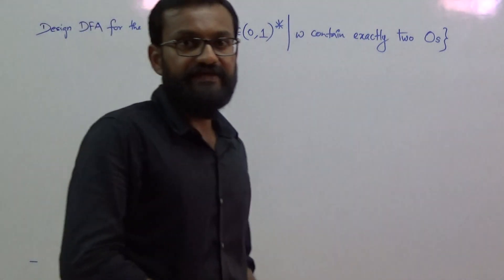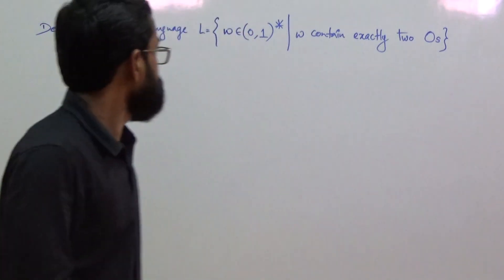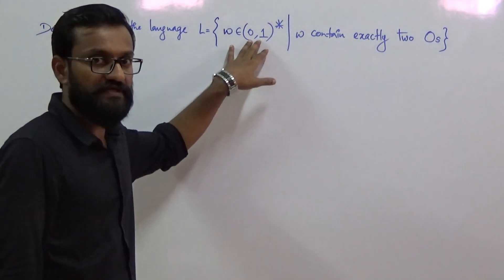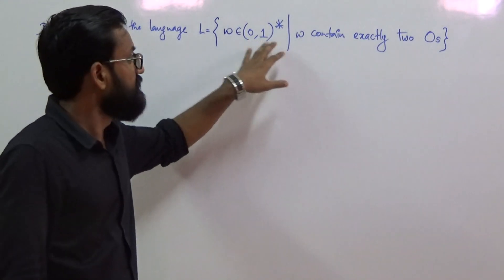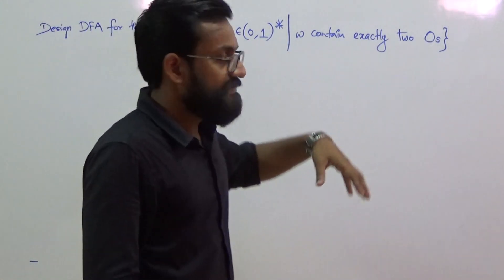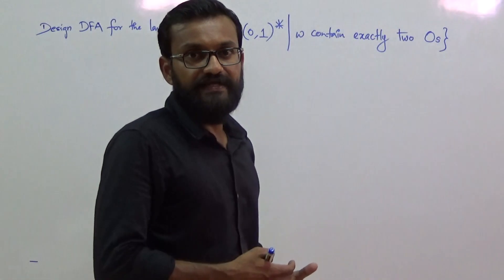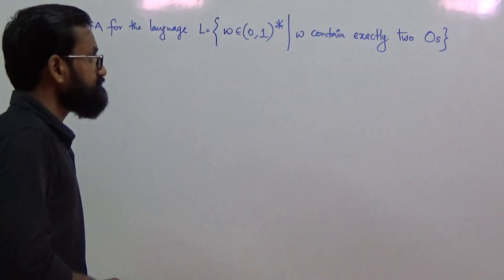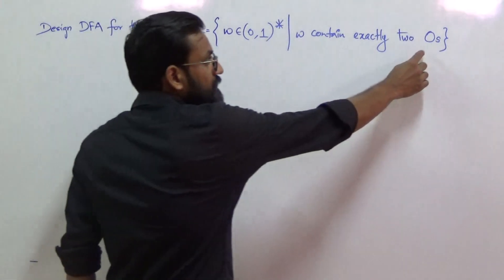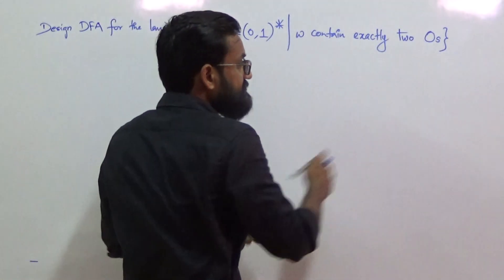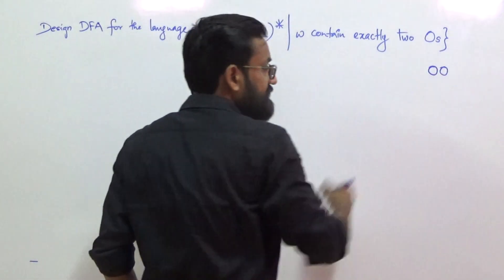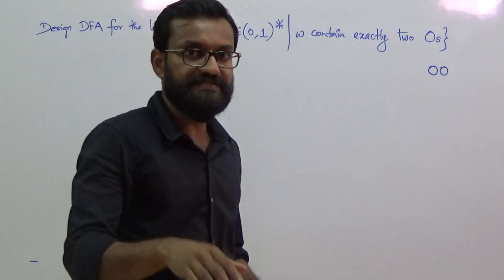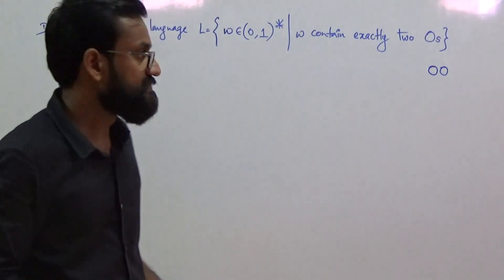We are going to design a DFA for the language containing strings over 0s and 1s where each string contains exactly two 0s. The minimum string in this language is '00', so any string must contain exactly two 0s.